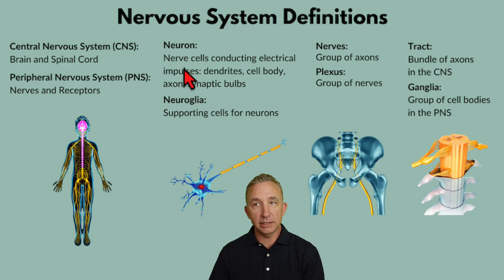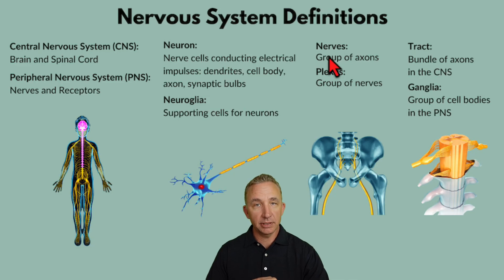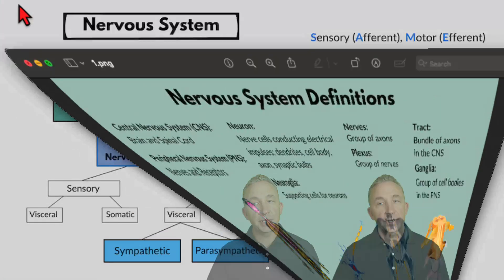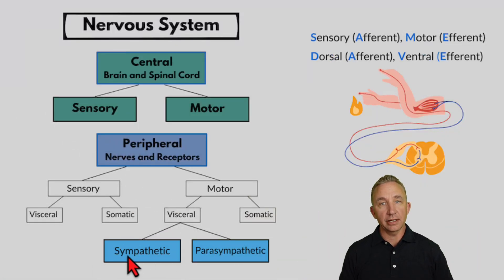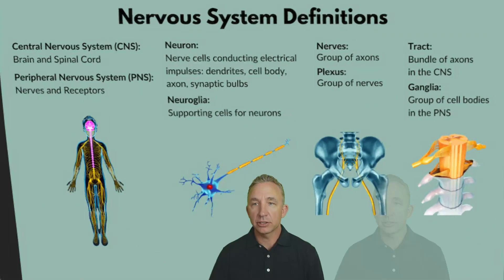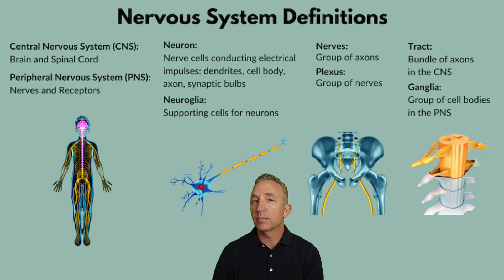A group of nerves held together with connective tissue is called a plexus. Axons within the central nervous system form a tract. A ganglion is a group of cell bodies — we'll see this when we look at the spinal cord, and also in the sympathetic chain ganglia used to communicate the fight-or-flight system. Understanding this hierarchy — the directional flow of information to the brain and spinal cord and back out, along with these key definitions — is essential before moving on to the structures of the brain, spinal cord, and how information flows.